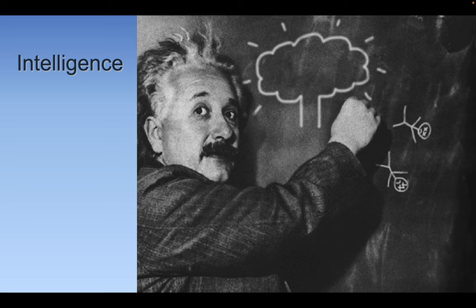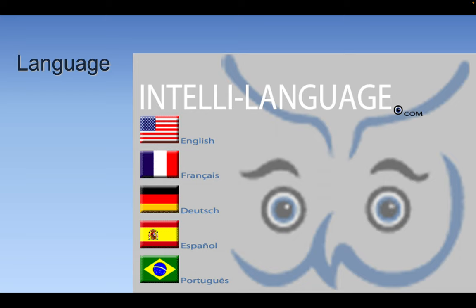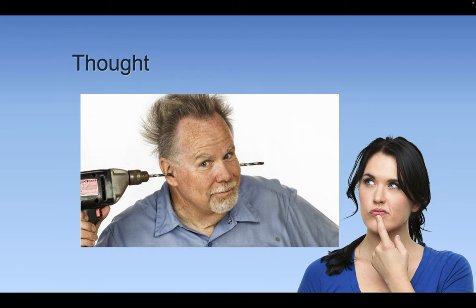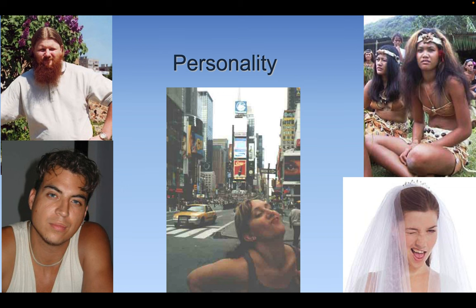I have a picture of Einstein. I thought his IQ was 160, but people have been saying lately it was over 180 — very intelligent man. Language — different languages. English, Spanish. There is a country in South America that doesn't speak Spanish; they speak Portuguese, which is very similar to Spanish. Thought. Growth and development — human growth and development, always exciting. Personality — different personalities.